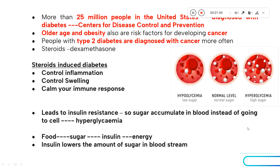During cancer treatment, hyperglycemia is usually seen. Steroid induced diabetes is the same thing. Basically steroids are introduced to reduce or control inflammation, to control swelling, or to calm the immune response — because during cancer treatment your immune system has to be calm so that it does not initiate other issues. But a side effect of giving steroids is hyperglycemia.